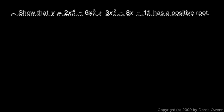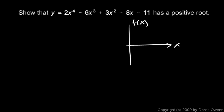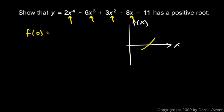Next example: show that y equals 2x to the fourth minus 6x cubed plus 3x squared minus 8x minus 11 has a positive root. This is a fourth degree function which will have some characteristic shape. Finding f of 0 is easy — all terms with x become 0, so f of 0 equals negative 11. I'll plot that point down here.